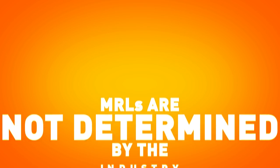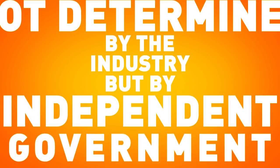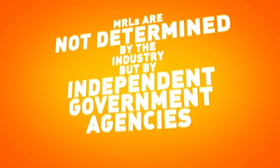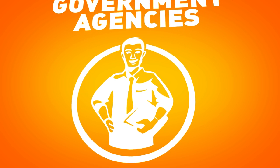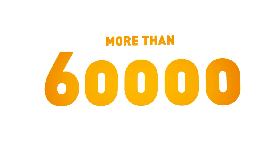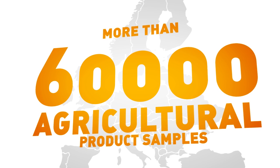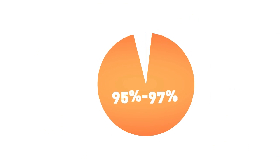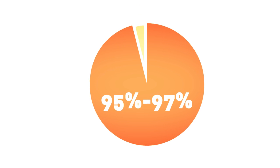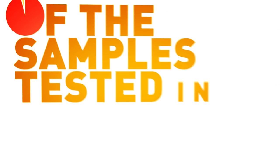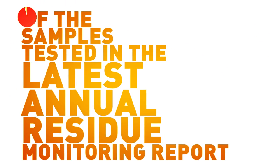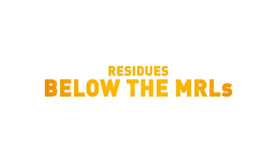MRLs are not determined by the industry, but by independent government agencies who fully review each active substance present in pesticides. More than 60,000 agricultural product samples are tested for residues every year in Europe. The report shows that 95 to 97% of the samples tested in the latest annual residue monitoring report either contain no measurable residues or residues below the MRLs.